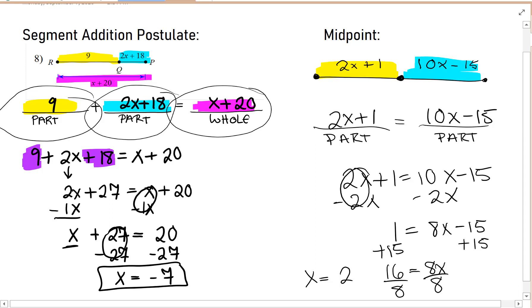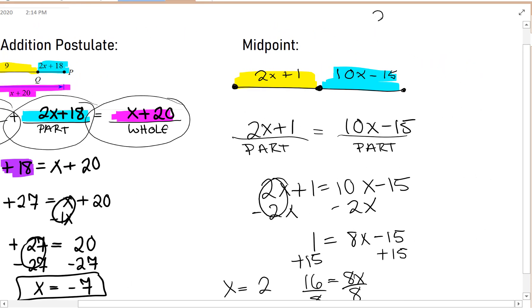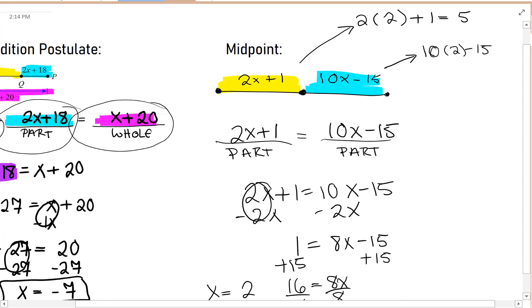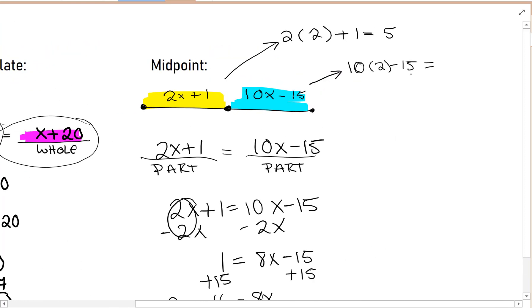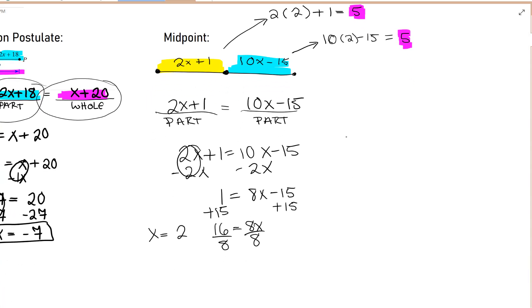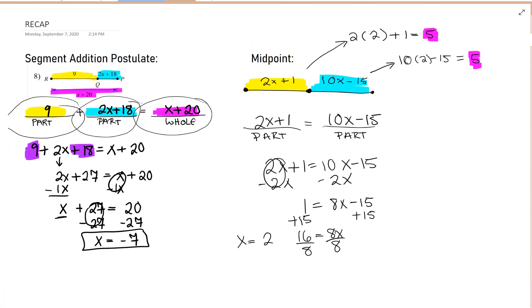And what would the length of these segments be if X is equal to 2? You simply plug that X in. So 2 times 2 plus 1 is 4 plus 1 is 5. And here 10 times 2 minus 15. 20 minus 15 is also 5. Be sure to check that your segments are equal in length because that's what it means to have a midpoint.